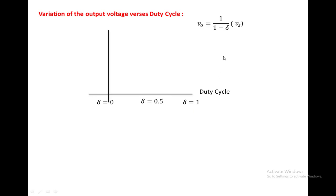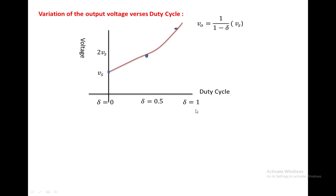Taking three values of delta individually: when delta equals 0, the output voltage equals V_S; when delta equals 0.5, the output voltage equals 2V_S; when delta equals 1, the output voltage becomes infinity — a very high value. Joining all these points gives a curve showing that as the duty cycle changes from 0 to 1, the output voltage changes from V_S to infinity. Whatever the duty cycle, the output voltage is always greater than the input voltage — that is why we call it a boost converter. This boosting operation occurs only due to the presence of inductance in the circuit.